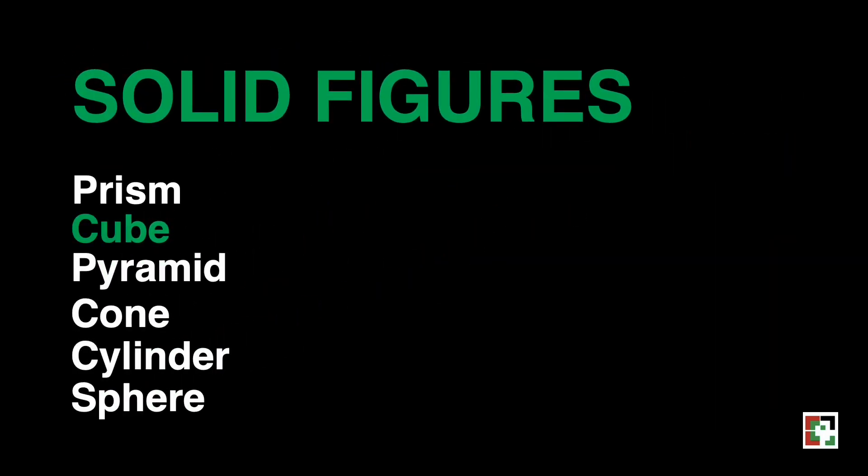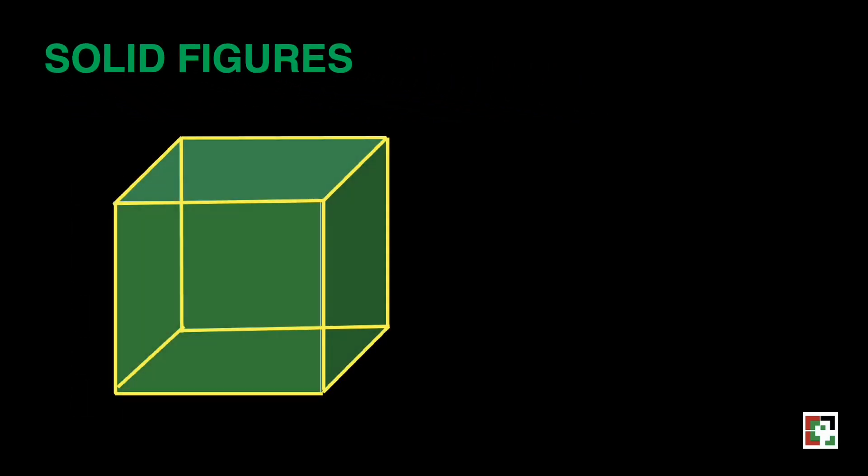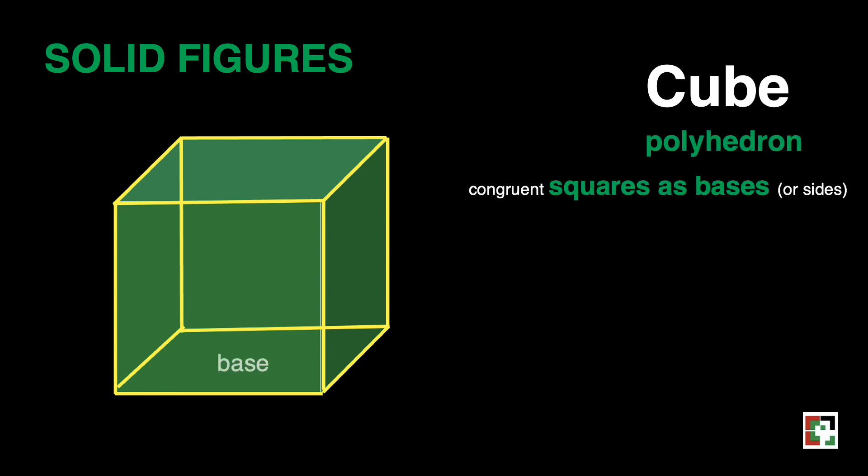Now, let's move on to the cube. This is a cube. A cube is also a prism with congruent squares as bases or sides and lateral faces. The difference between a cube and a rectangular prism is that you can pick any as your two faces since all the faces are congruent.